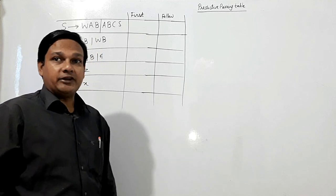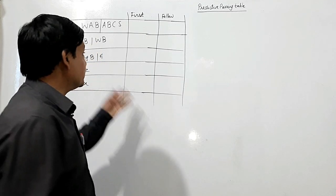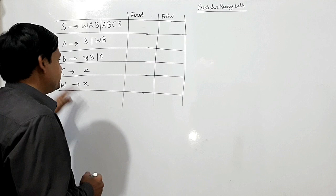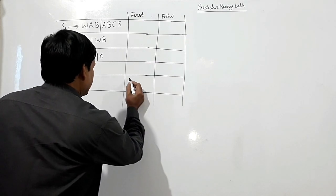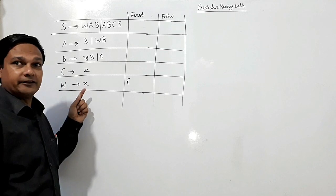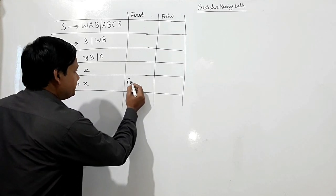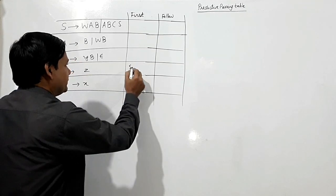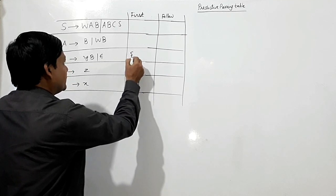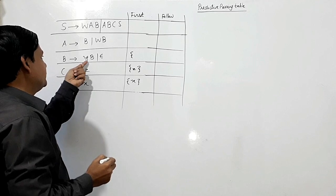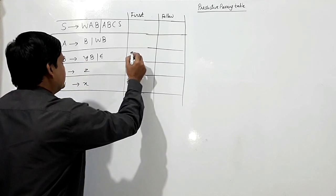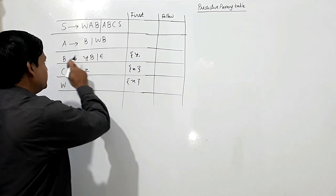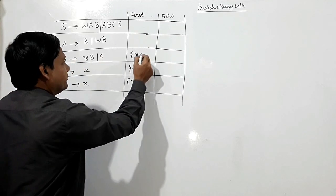First of all, we shall have to find first and follow sets for this grammar. For the first set, W produces X, so first of W will be X. C produces Z, so first of C will be Z. For first of B: from B produces YB, Y is a terminal, so first of B will be Y; and from B produces Epsilon, first of B will also include Epsilon.